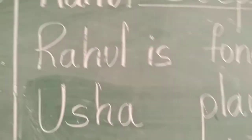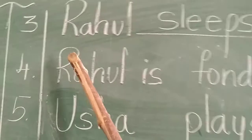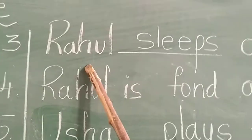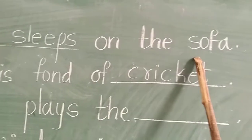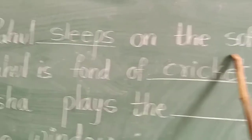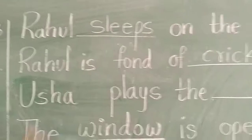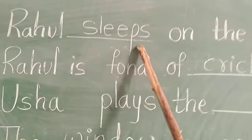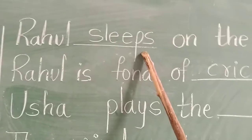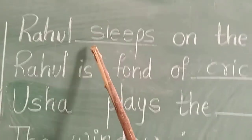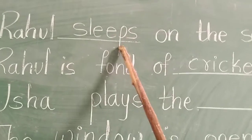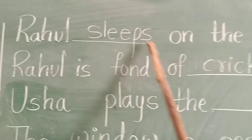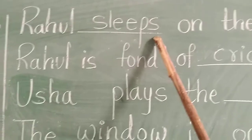Third blank: Rahul dash on the sofa. Rahul sleeps. Spelling: S-L-E-E-P-S, Sleeps.